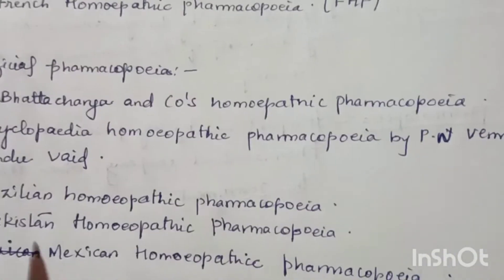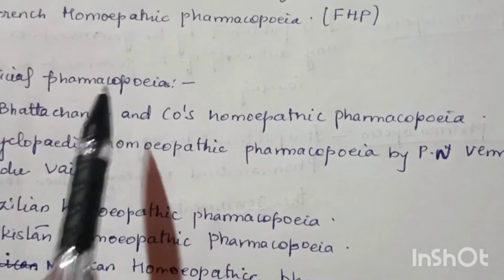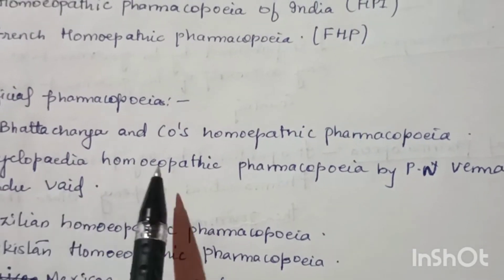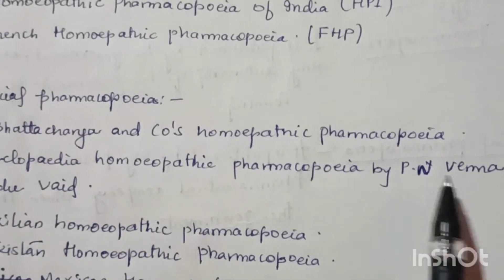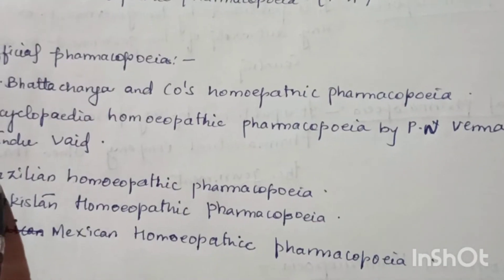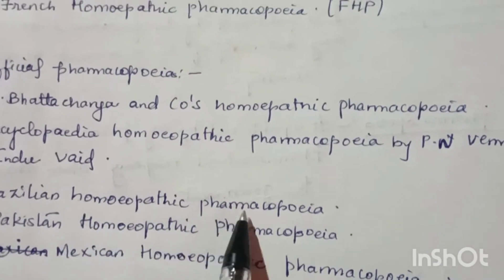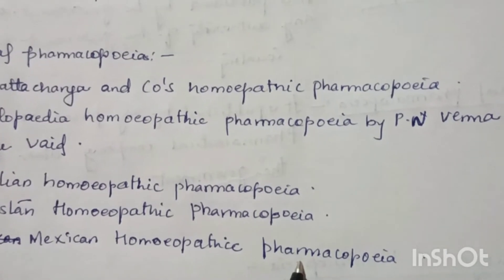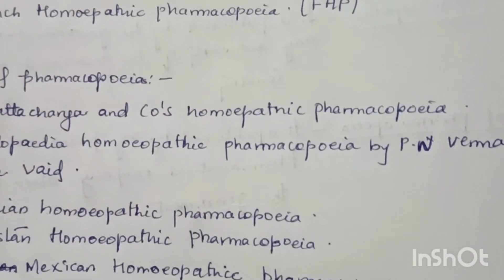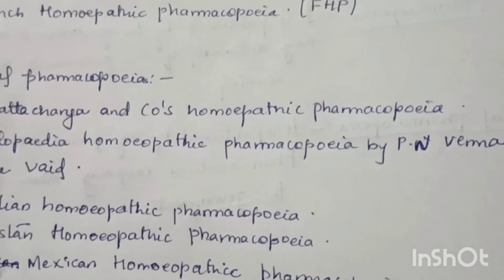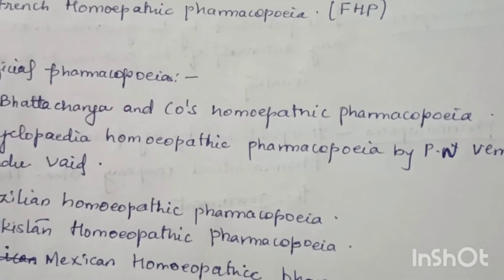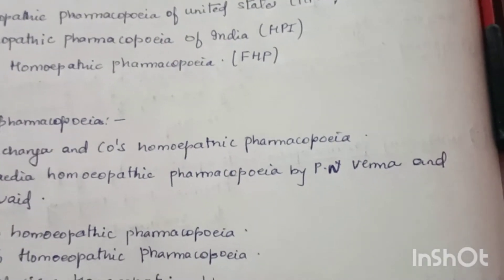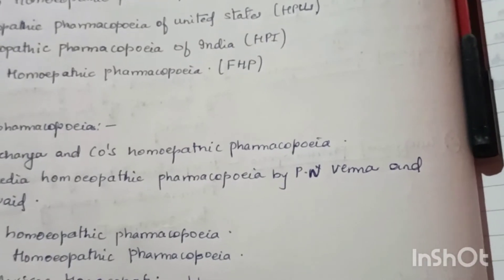The unofficial pharmacopoeias include M. Bhattacharya and Coase Homeopathic Pharmacopoeia, Encyclopedia, Homeopathic Pharmacopoeia by P. N. Verma, Brazilian Homeopathic Pharmacopoeia, Pakistan Homeopathic Pharmacopoeia, and Mexican Homeopathic Pharmacopoeia. These are pharmacopoeias published by any person or any authority other than the government.